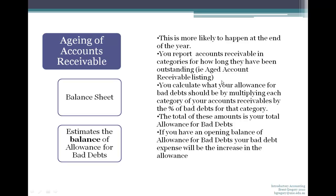You calculate what your allowance for bad debts should be by multiplying each category. The categories are: current items, those one month old (30–60 days), then 60–90 days, and 90 days plus. Each category has a different percentage you think is collectible. You apply that percentage to the total amount in each category, and the sum of all these amounts is your total allowance for bad debts.